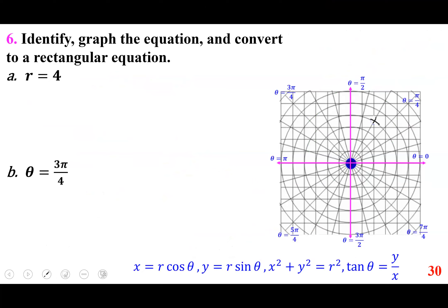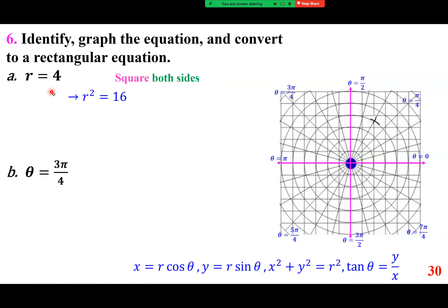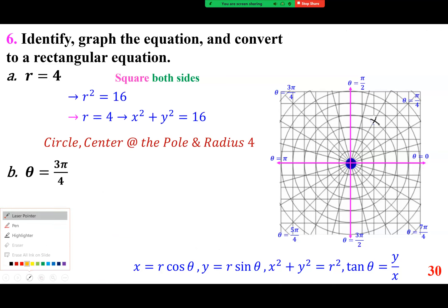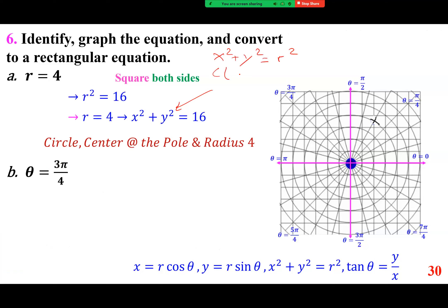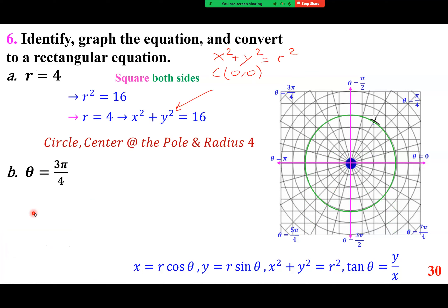For r equals 4: square both sides to get r squared equals 16, which equals x squared plus y squared equals 16 — a circle centered at 0 comma 0 with radius 4. Reminding you: x squared plus y squared equals r squared has center at the origin.